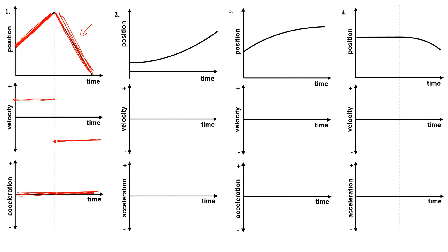Number two starts with a flat slope, which means I have zero velocity, and then as it goes forward, the slope gets positive, so that tells me there would be some positive velocity later. For all these problems we're assuming if there's an acceleration it's constant, so I would draw a straight line on the velocity versus time graph, because the slope of velocity versus time is acceleration, and a straight line tells me there is a constant slope and therefore a constant acceleration.